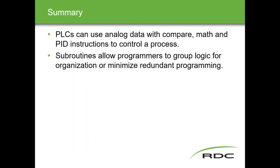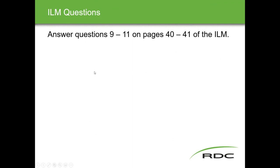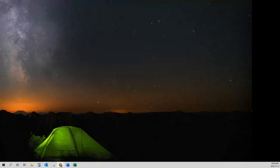To summarize: PLCs can use analog data with compare instructions, math instructions, and PID instructions to control a process. Subroutines allow programmers to group logic for organizational purposes and to minimize redundant programming. These are fundamental building blocks going forward — lots of material covered today, significantly more than yesterday's half-hour session.